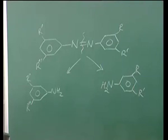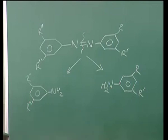Yesterday we saw that dye molecules were broken down by azo reductase, but today we are comparing with oxidases. The series of enzymes called azo reductase and the series of enzymes under the category of oxidases are not the same — as the names suggest, they are two different categories. Nevertheless, these enzymatic reactions are very fast compared to normal chemical reactions.